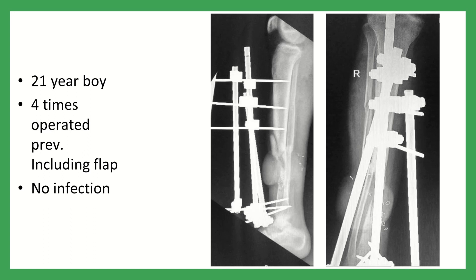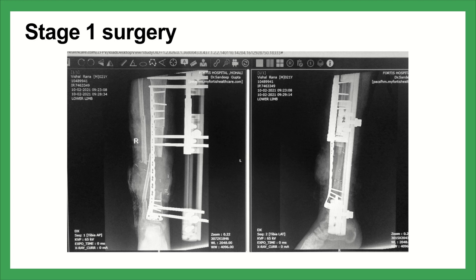At presentation, he had a fixator in situ. The flap was well healed with no signs of infection; CRP and ESR were normal. There was a defect in the distal third of the tibia, as seen in the X-ray. He was planned for the rail plate technique.